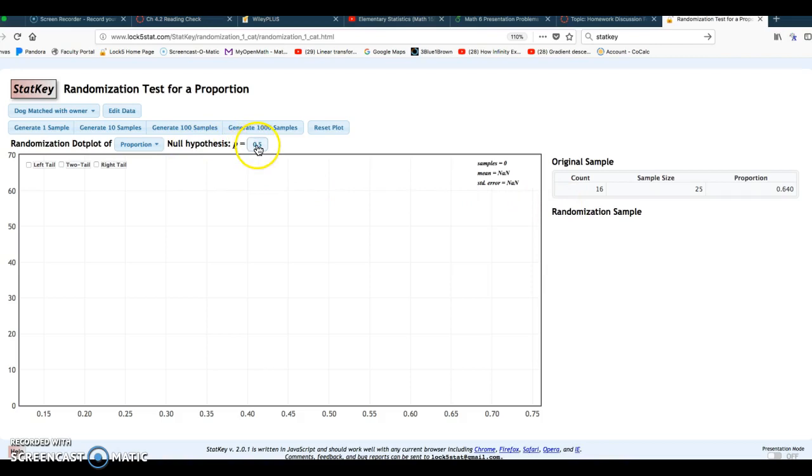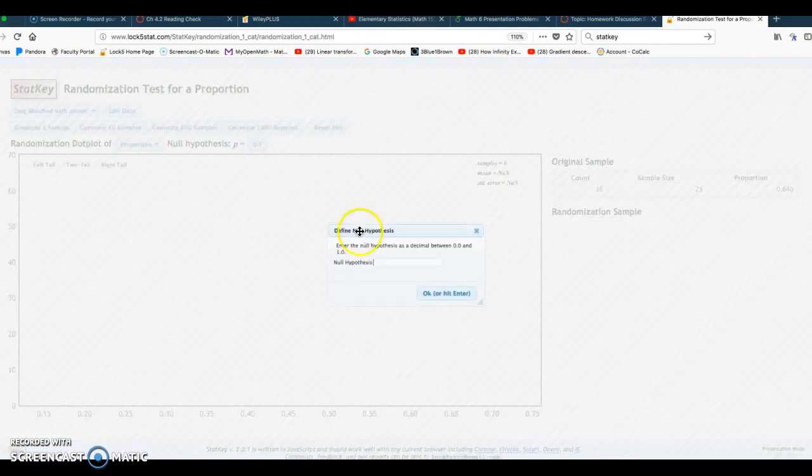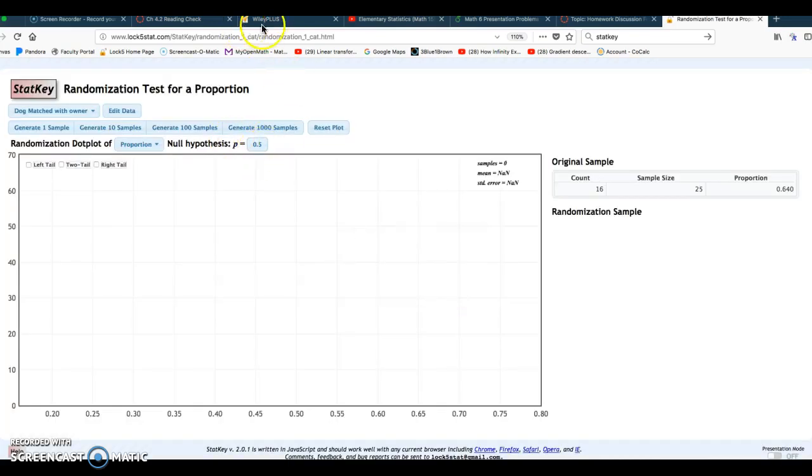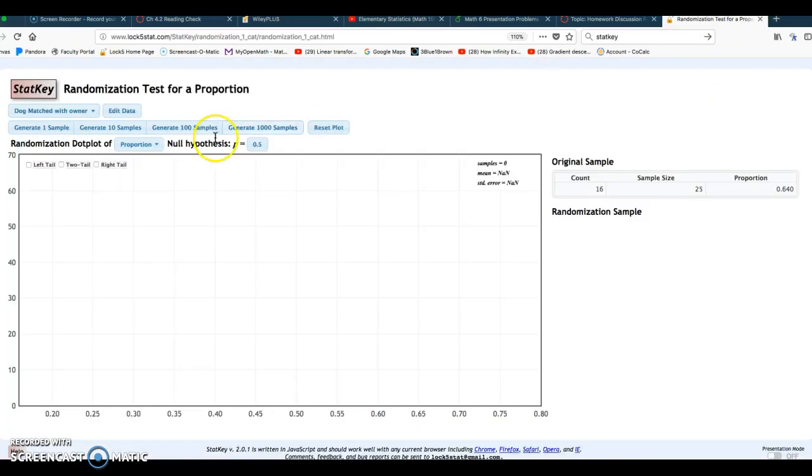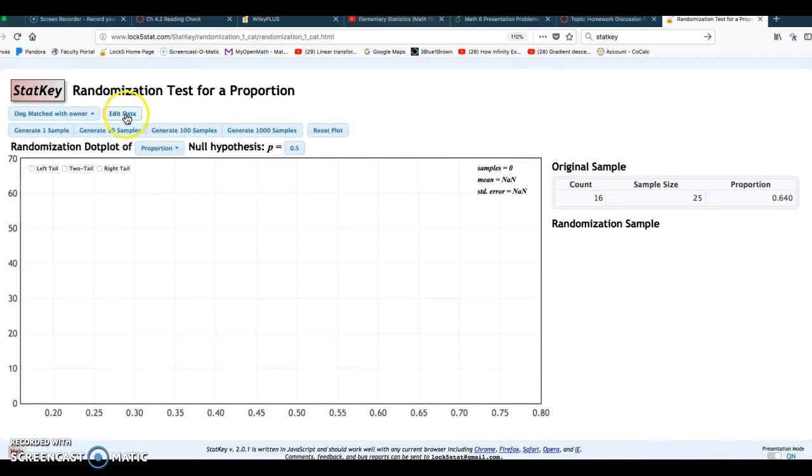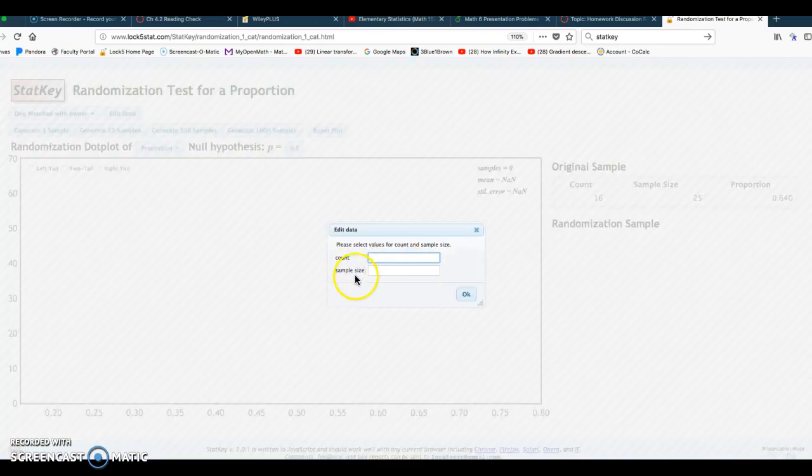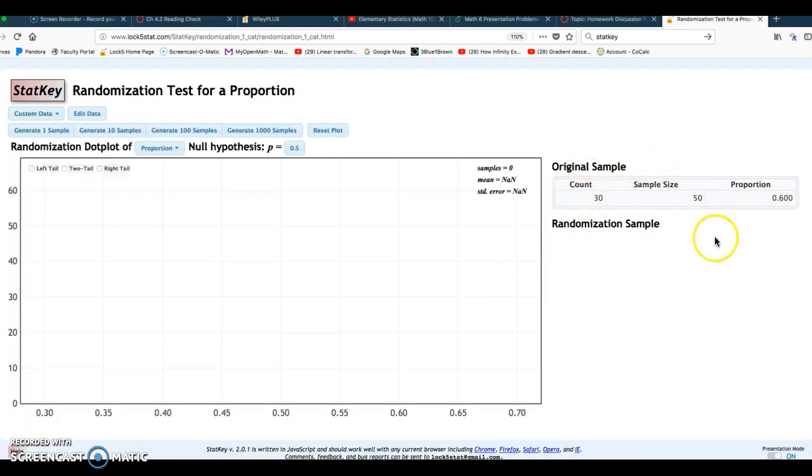And the first thing I'm going to do is check the null hypothesis. It does say 0.5, so I didn't have to change that, but I want to make sure that null hypothesis matches up with the null hypothesis given in the problem. And then we need to enter the sample data, so we get 30 out of 50. So to do that, I'm going to click on the Edit Data button up here, click Edit, we have Count in Sample Size. The count, that's the number of successes, is 30 out of 50, 60%. Click OK, we get our original sample here.